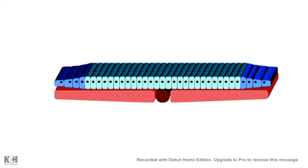Cadherin and adherence junctions are important in development, particularly in neural tube development. After gastrulation there are three defined germ layers — ectoderm, mesoderm, and endoderm. The ectoderm gives rise to the nervous system and, as an epithelium, expresses E-cadherin. However, the ectoderm just above the notochord begins expressing N-cadherin and is known as the neuroectoderm. Tissue identity can therefore differ depending on which adherence junction proteins are expressed.